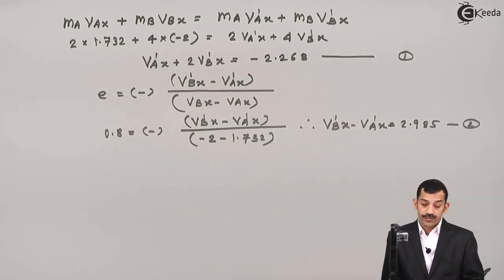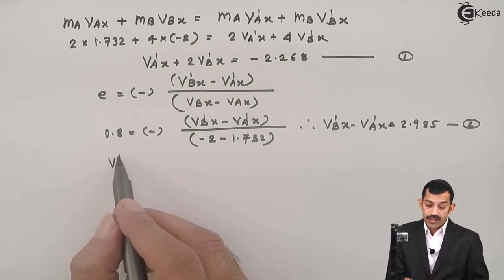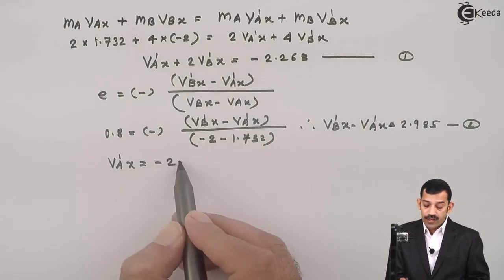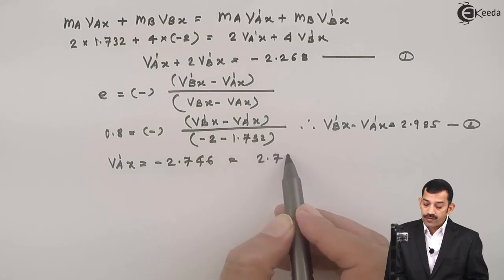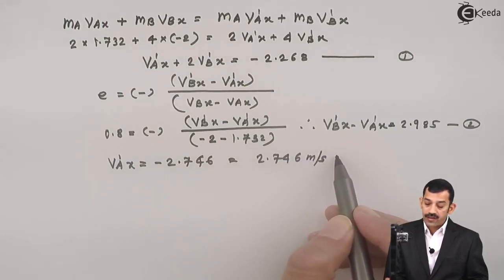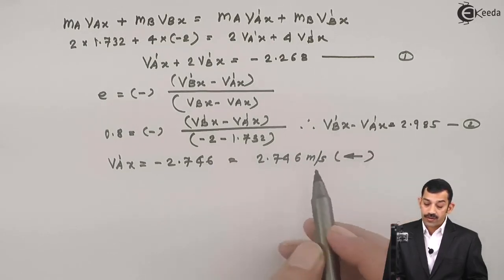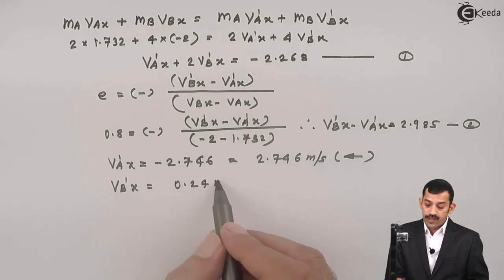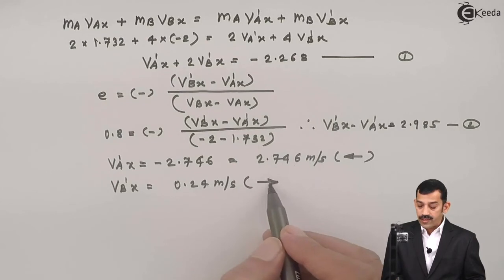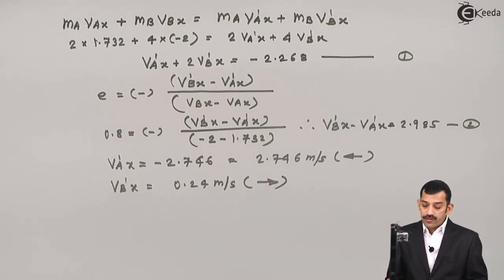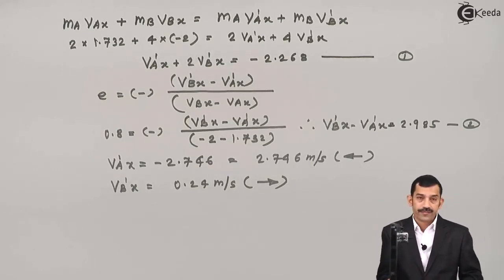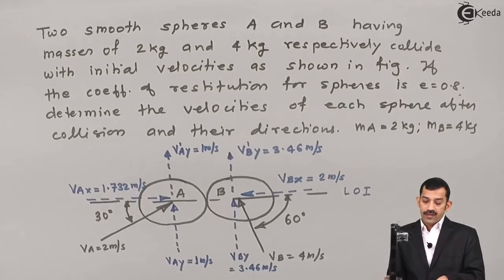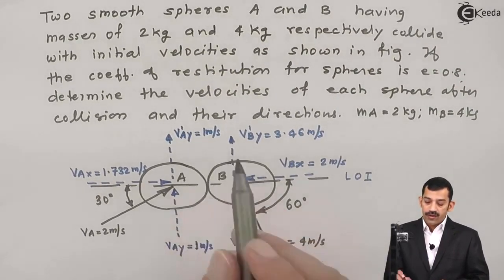Solving Equations 1 and 2, we get: vA'x = −2.746 m/s, meaning the horizontal component of body A is 2.746 m/s leftward. And vB'x = 0.24 m/s, which is positive, meaning rightward. These are the horizontal components after impact. The vertical components vA'y = 1 m/s upward and vB'y = 3.46 m/s upward have already been determined.